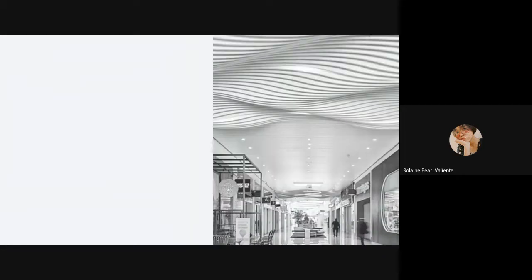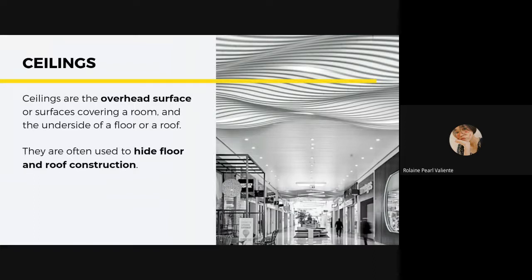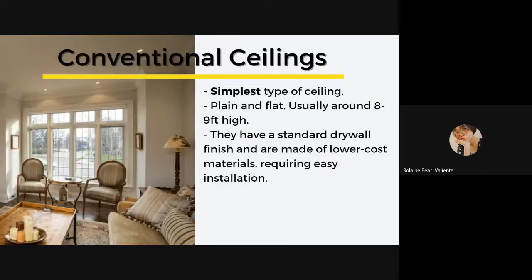So what are ceilings? Ceilings are overhead interior surfaces that cover the upper limits of a room. They are not generally considered as a structural element but a finished surface concealing or hiding the underside of the roof structure or the floor story above. They have been favorite places for decoration from the earliest times, either by painting the flat surface, emphasizing structural members, or treating it as a field for an overall pattern or relief.